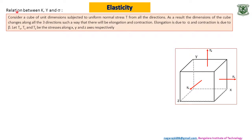Let us continue with the remaining. Next one is relation between bulk modulus, Young's modulus and Poisson's ratio. Consider a cube of unit dimension subjected to uniform normal stress T from all the directions. As a result dimensions of the cube changes along all the three directions such a way that there will be elongation as well as contraction. Elongation is due to alpha and contraction is due to beta. Let Tx, Ty and Tz be the stresses along x, y and z axis respectively.